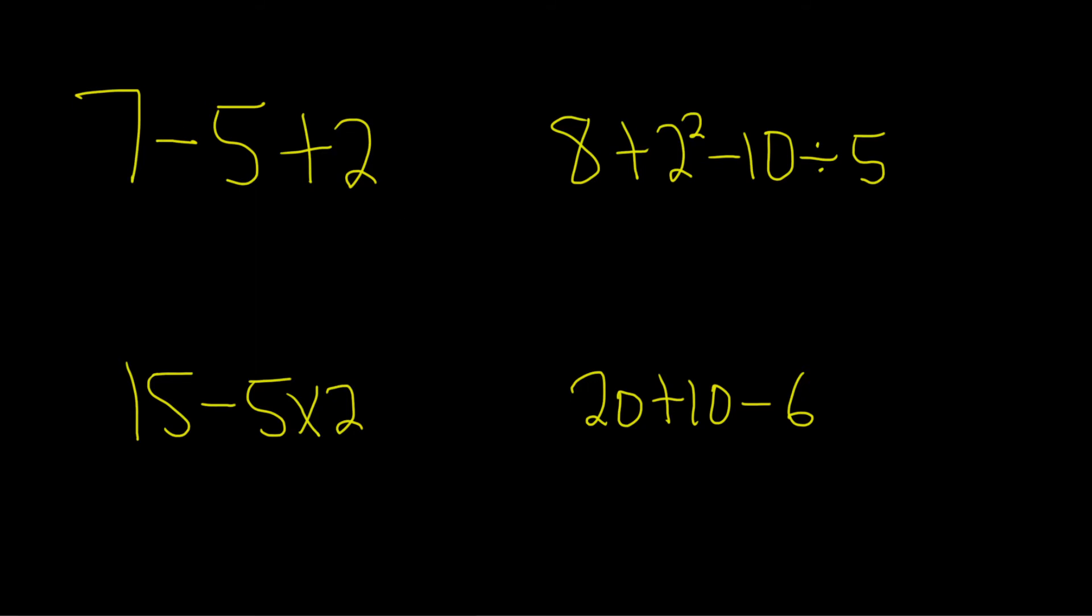Let's do each of these examples. Here we have only subtraction and addition. Working left to right, we have 7 minus 5, which is 2. Then you bring down the plus sign and bring down the 2. Now we do 2 plus 2, which equals 4. That's the answer to that one.